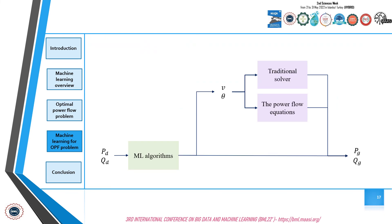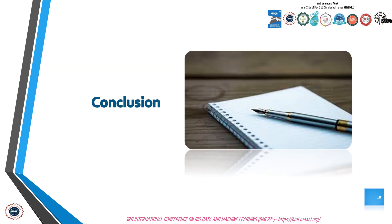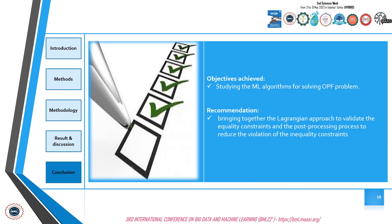We can summarize that machine learning algorithms are able to replace all of the resolution process of the optimal power flow problem, or only part of it. We can conclude that using machine learning algorithms either to provide data to a traditional solver or the reverse is a technique that gives interesting results. In addition, we can improve the solution predicted by machine learning algorithms by bringing together the Lagrangian approach to validate the inequality constraints and the post-processing process to reduce the violation of the inequality constraints.